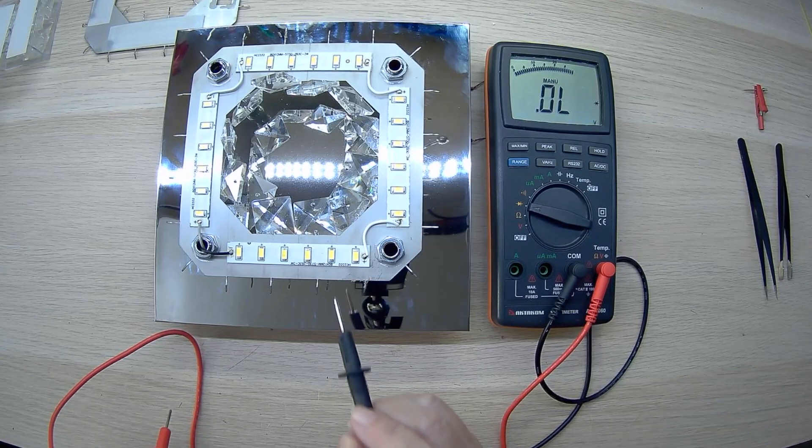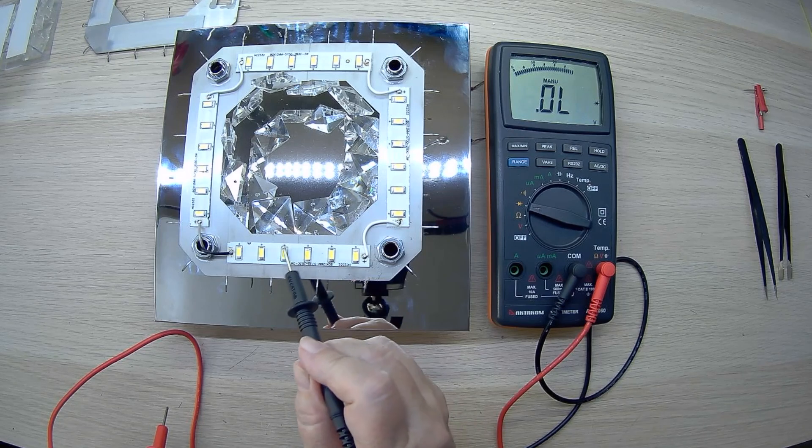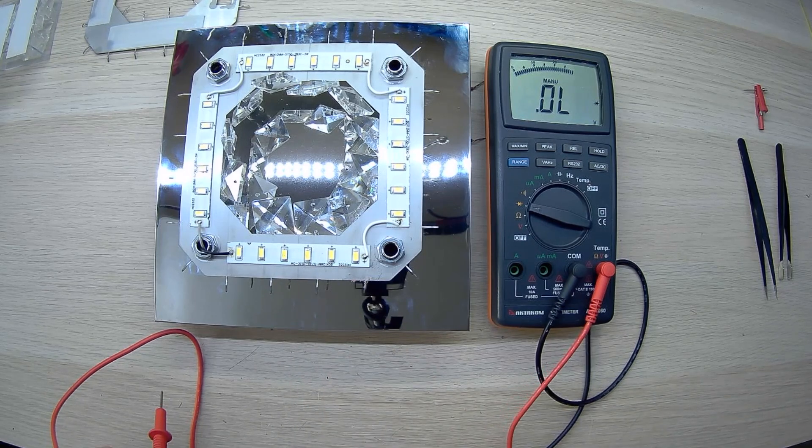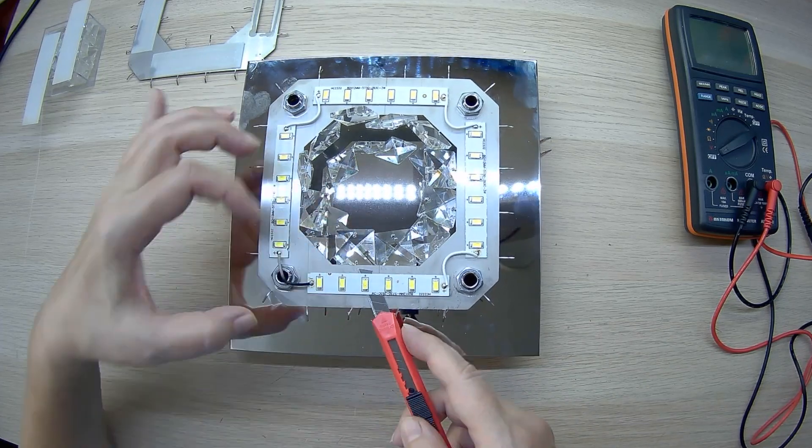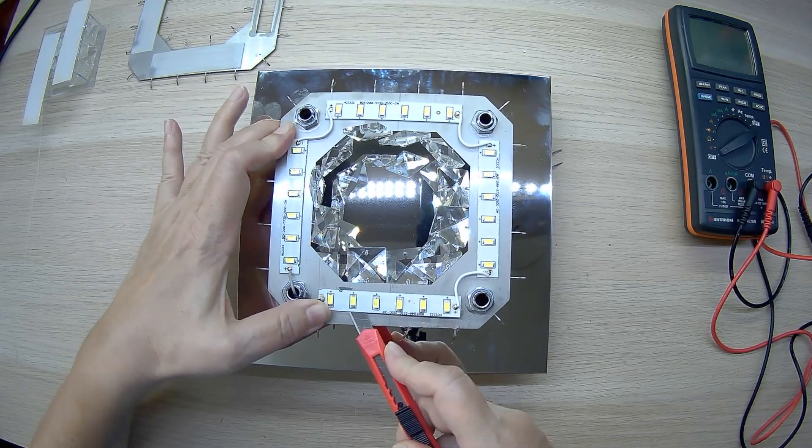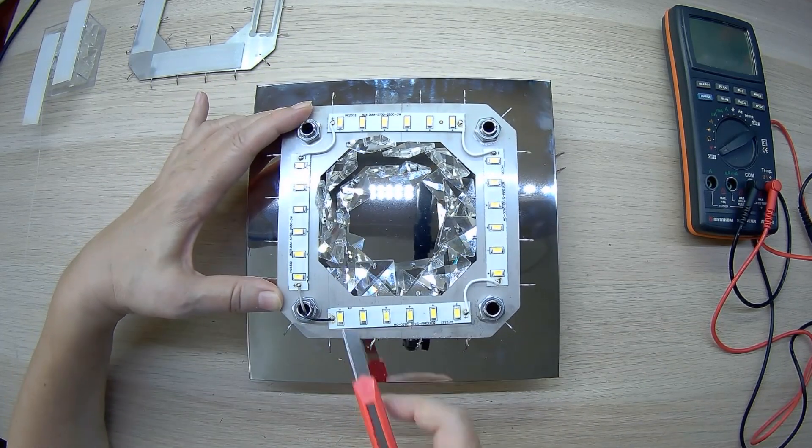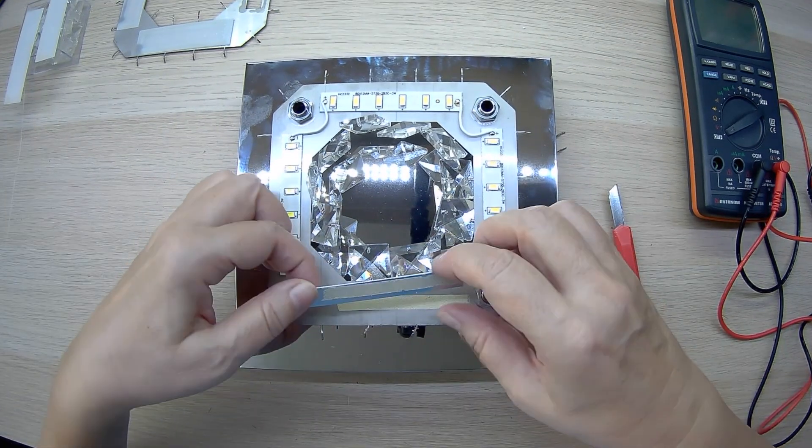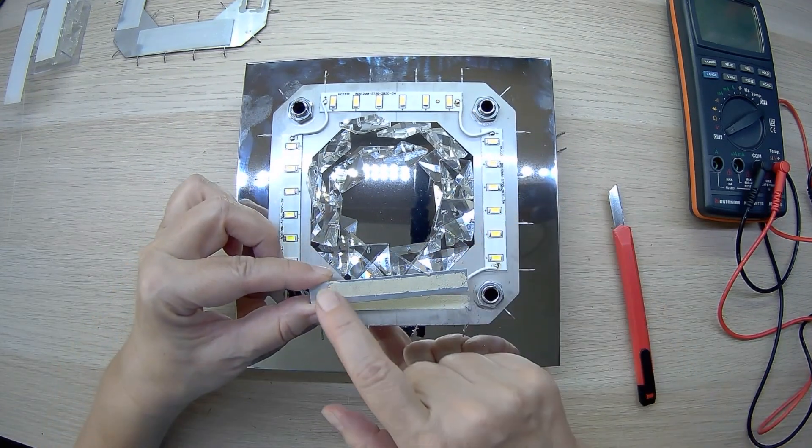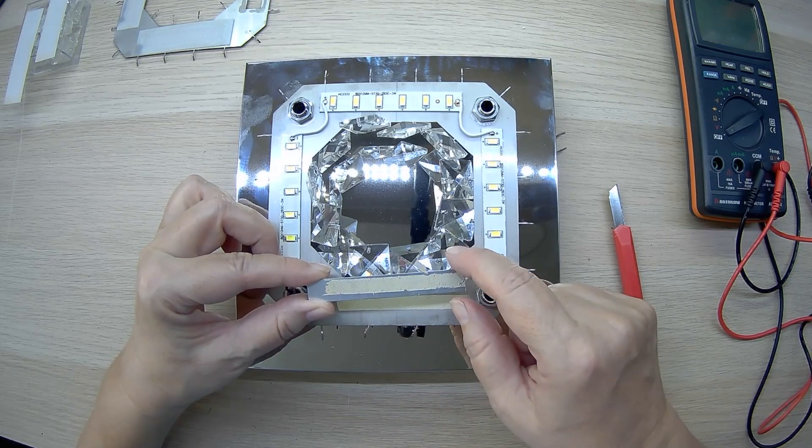During this work we found a couple of dead LEDs. We need to replace them. The next stage of our work is dismantling the LED strip. As a rule, the strip is attached to adhesive tape and can be removed simply with a blade. It is important to do this slowly and carefully after removing the strip of thermal paste.